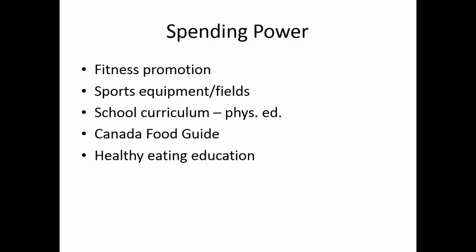Spending power. Governments utilize their spending power to promote the health of the public in a number of ways. These include advertising to promote fitness, the provision of sports fields, equipment, and parks so people will get out and exercise, and the inclusion of physical education in school curriculums. The development and recent revision of the Canada Food Guide is intended to guide Canadians as to healthy eating, as are other types of nutrition education initiatives. Each of these is enabled by use of the public purse in the interest of public health.